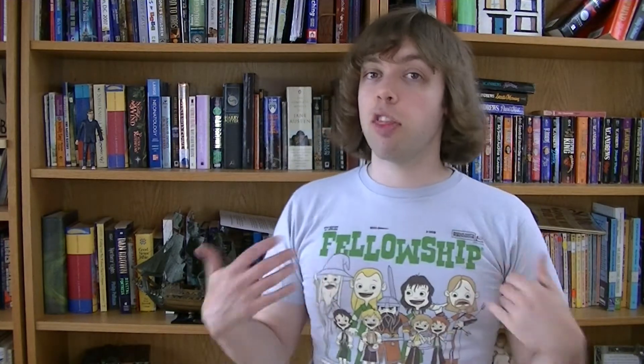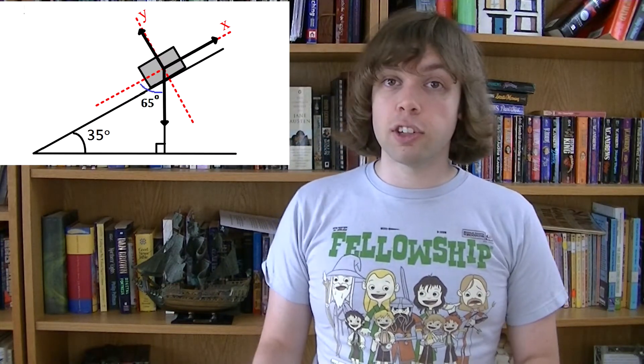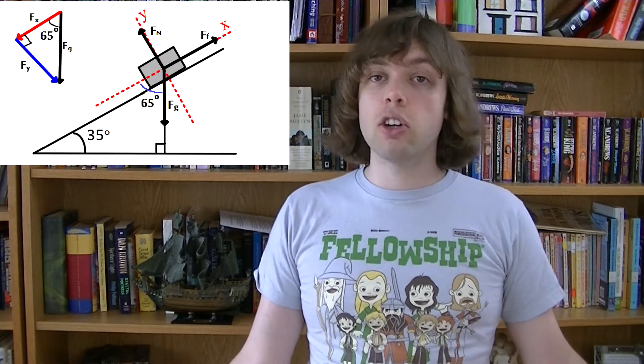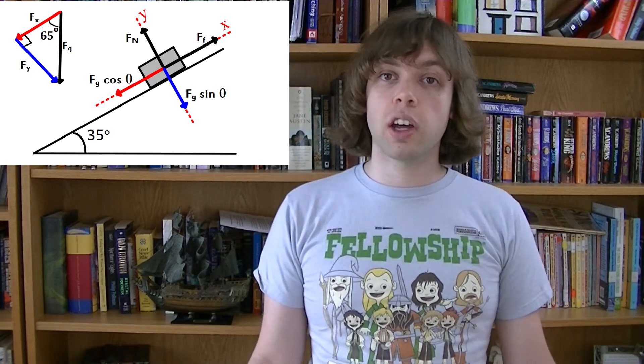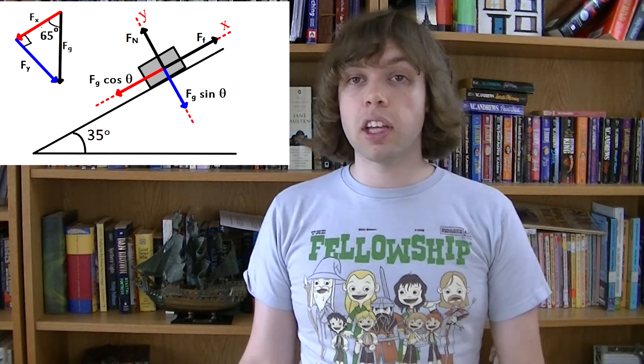Now all we have to do is break gravity into an x and y component. If the slope is at 35 degrees, then this angle will be 65 degrees. If we draw a vector triangle and use SOH-CAH-TOA, we'll find that the x component is Fg cosine theta and the y component is Fg sine theta. If you're not sure how that works, you should watch one of these two videos. So now all our forces are acting in the x direction or the y direction.